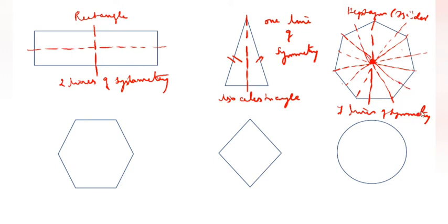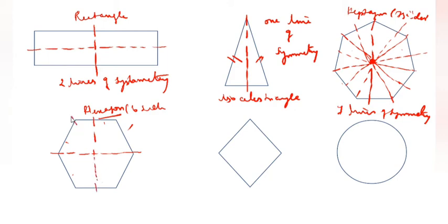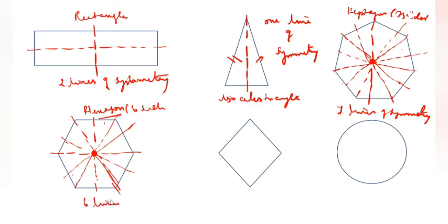If hexagon is 6 sides, means 6 lines of symmetry. Pentagon is 5 means 5 lines of symmetry. Don't confuse — hexagon is 6 sides: 1, 2, 3, 4, 5, 6 sides. So you see 1, this is 2, this is 3, this is 4, this is 5, this is 6. All lines should meet in one place. So, 6 lines of symmetry.